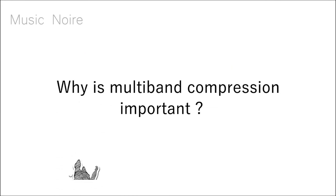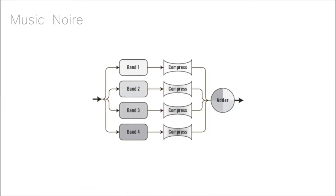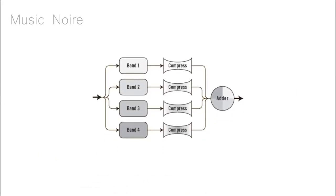Why is it important to use multi-band compressors? Multi-band compression is more versatile than single-band compression. The end product is more natural and clear. You also have more control over how dynamics are shaped and managed. Standard compressors, for example, affect the full frequency range of an audio source.